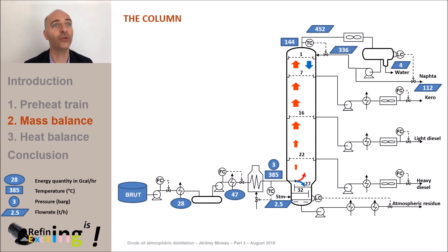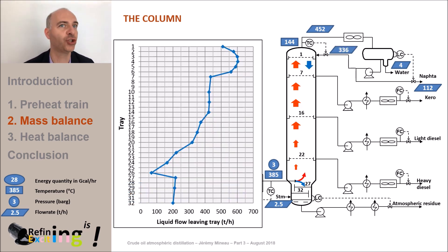This time, on the graph, we show the liquid flow leaving each tray. The 336 tons per hour reflux at the top of the column acts like a sort of quench when it meets the ascending gas flow. This is the reason why liquid leaving tray 1 has a flow rate of about 500 tons per hour, which is much more than the 336 tons per hour reflux rate.